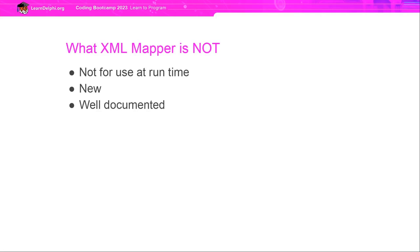XML Mapper is not for use at runtime — it's a design-time tool. What we're going to do in this demonstration is use the XML Mapper at design time to create a transformation file, and it's that transformation file that we use during our application at runtime.